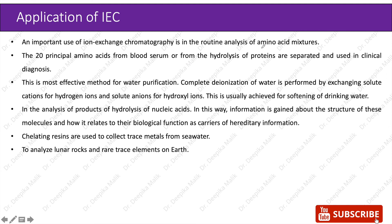An important use of ion exchange chromatography is in the routine analysis of amino acid mixtures. The 20 principal amino acids from blood serum or from the hydrolysis of proteins are separated and used in clinical diagnosis. This is the most effective method for water purification — complete deionization of water is performed by exchanging solute cations for hydrogen ions and solute anions for hydroxyl ions, usually achieved for softening of drinking water. Ion exchange chromatography is also used in the analysis of products of hydrolysis of nucleic acids, giving information about the structure of these molecules and how it relates to their biological function as carriers of hereditary information. Chelating resins are used to collect trace metals from seawater — chelating agents are chemical compounds that react with metal ions to form a stable, water-soluble complex.